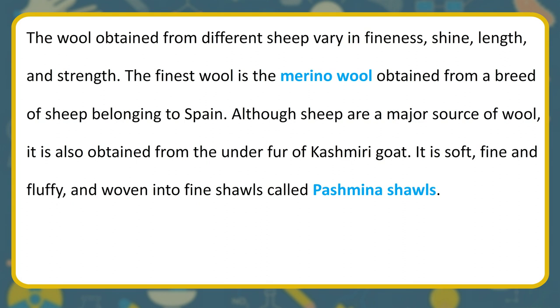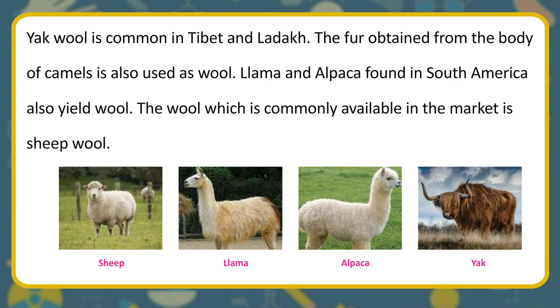The wool obtained from different sheep varies in fineness, shine, length, and strength. The finest wool is merino wool, obtained from a breed of sheep belonging to Spain. Although sheep are a major source of wool, it is also obtained from the under-fur of Kashmiri goat. It is soft, fine and fluffy, and woven into fine shawls called Pashmina shawls. Yak wool is common in Tibet and Ladakh. Fur from camels is also used as wool. Llama and alpaca found in South America also yield wool. The wool most commonly available in the market is sheep wool.